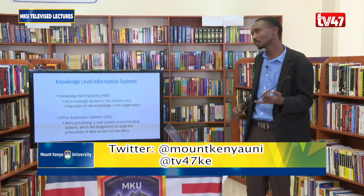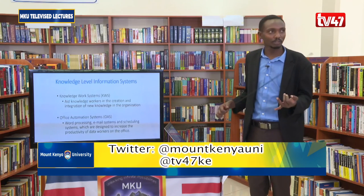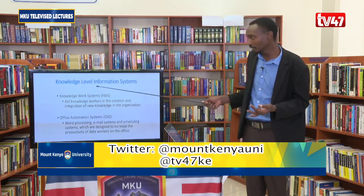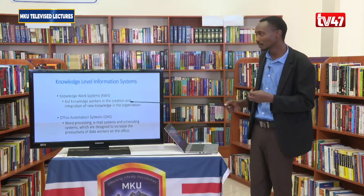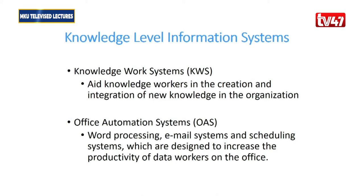The knowledge level within the organization is usually silent because nobody often mentions it alongside top, middle, and operational levels. But it is important to take note that somewhere within the organization we also have knowledge level information systems, which can be categorized into KWS — knowledge work systems for professionals in a particular field — or office automation systems, which anyone can use.